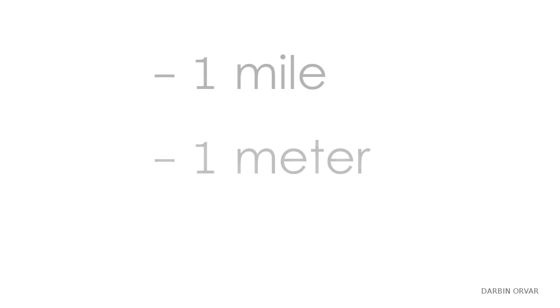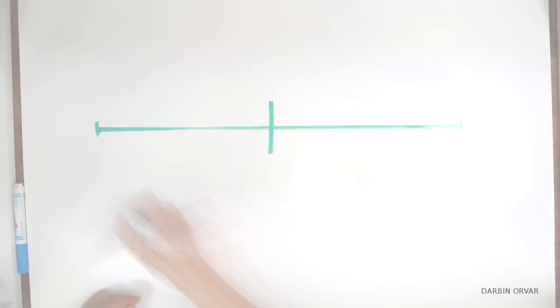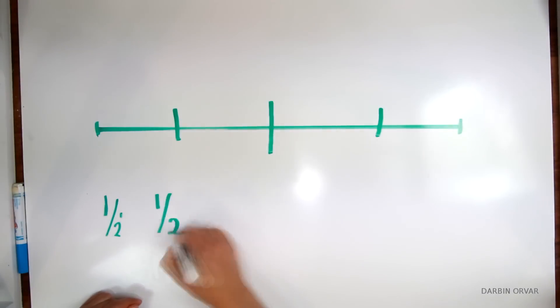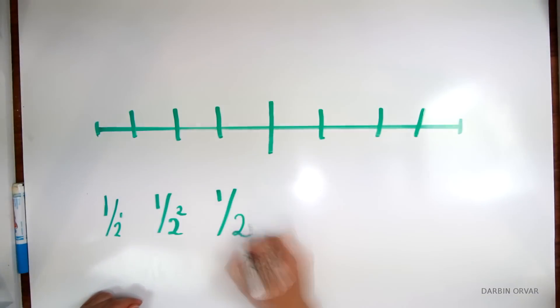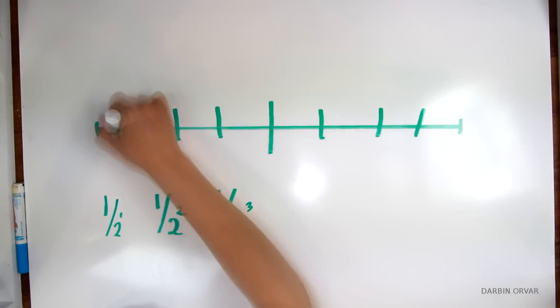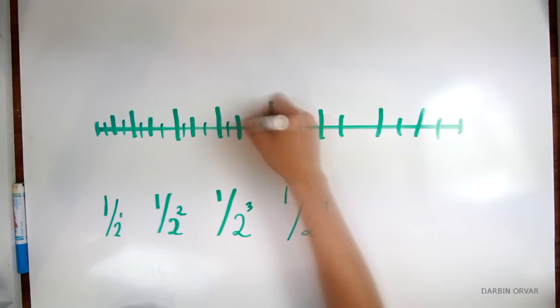You should note that it really doesn't matter what distance you choose. A mile, or a meter, or a Darwin — any distance you like can be understood fractionally, because I can bisect a line into halves infinitely.